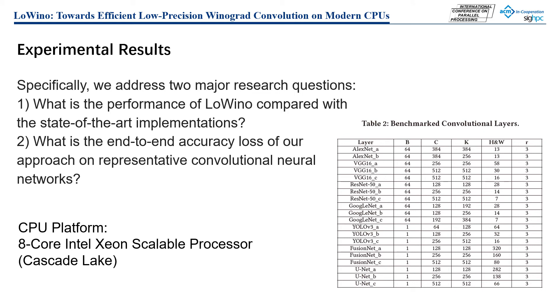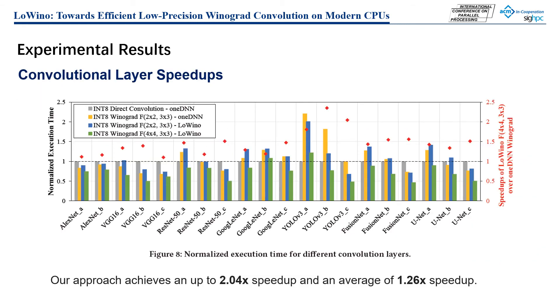Our experiments are performed on an 8-core Intel Xeon Scalable Processor which supports VNNI. We selected benchmarks from prevailing neural network models. We compare LoWino with the state-of-the-art low-precision convolution implementations in the ONEDNN library, including direct and Winograd convolution.